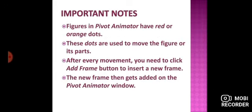Next, we have the important notes. Figures in Pivot Animator have red and orange dots. जो stick figures Pivot Animator में होती हैं, उनके अंदर red and orange dots होती हैं. These dots are used to move the figure or its parts — ये dots की help से हम figure को move कर सकते हैं और उसके parts को भी. After every movement, you need to click the add frame button to insert a new frame. जब भी आप figure में कोई movement करवाएंगे, उसके बाद add frame button पे click करना पड़ेगा so that आप new frame को add कर सकें. The new frame then gets added on the Pivot Animator window.